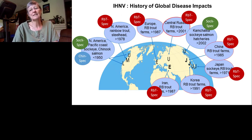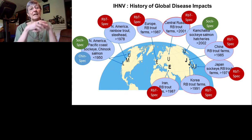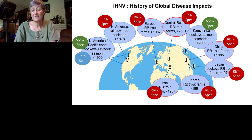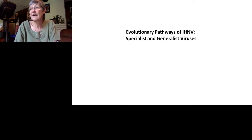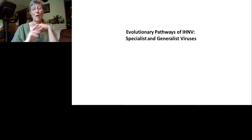These disease impacts and molecular epidemiology studies have led us to develop a theory of IHNV evolutionary pathways. The original viruses were in sockeye and Chinook, but thereafter there has been immense virus activity in rainbow trout due to host jumps. We now see viruses specifically adapted to sockeye, Chinook, or rainbow trout — both specialists and, recently, a generalist subgroup.